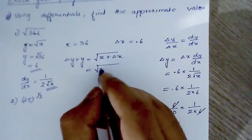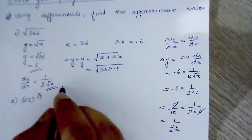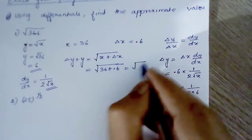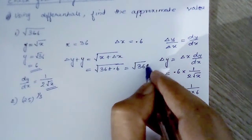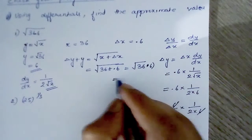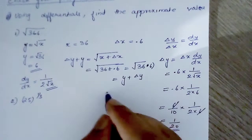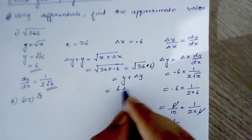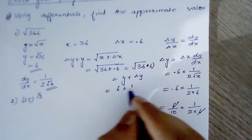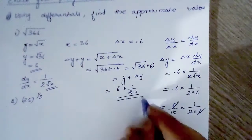So this is equal to root of 36 plus 0.6, which is root of 36.6, equal to y plus delta y. Since y equals 6 and delta y equals 1 by 20, the answer is 6 plus 1 by 20.